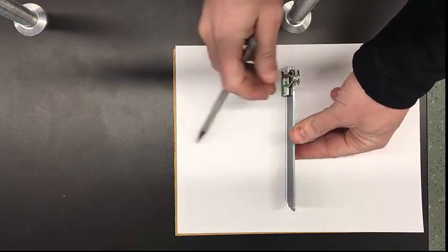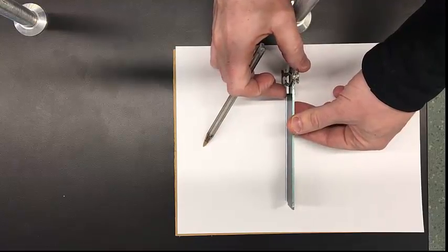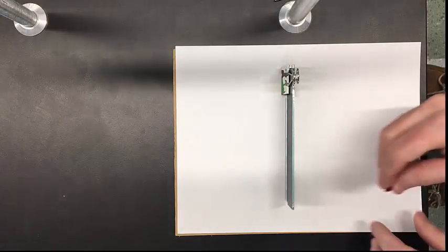You're going to start off with this setup here, and you're going to go ahead and place your mirror in the center of your paper over the piece of cardboard. Make sure you mark the back of your mirror with a pen.